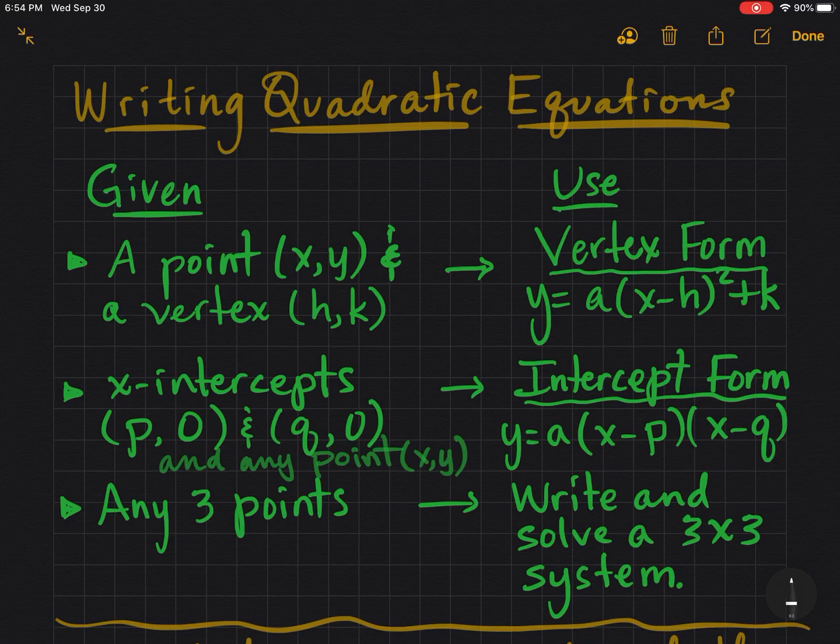Today we'll be writing quadratic equations. First, if you're given a point xy and a vertex, you use vertex form. Also, if you're given x-intercepts and any point, then you can use intercept form. But if you're given three points, you can write and solve a three-by-three system.